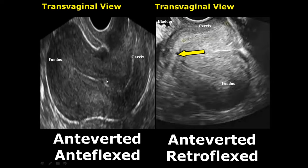And anteflexed — the body of the uterus is bending anteriorly. The bladder is supposed to be in the top left corner of the image. And here we have the anteverted and retroflexed combination.